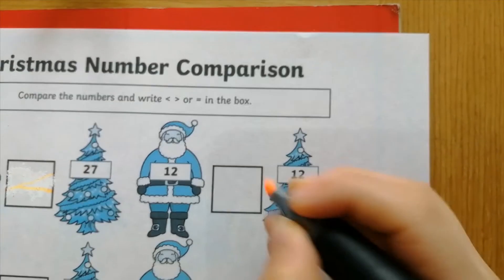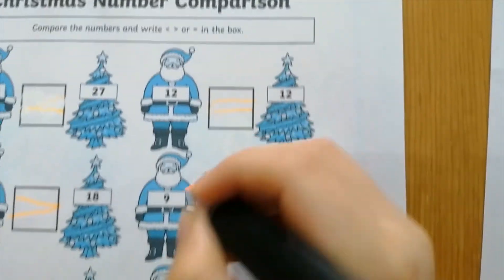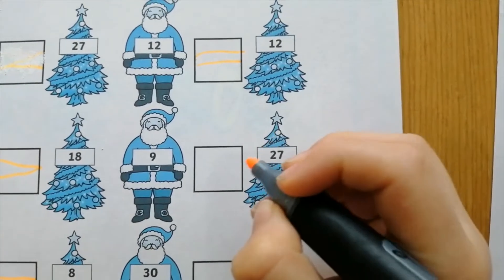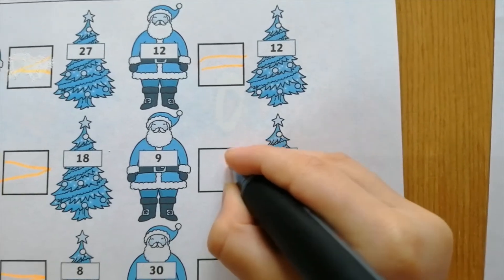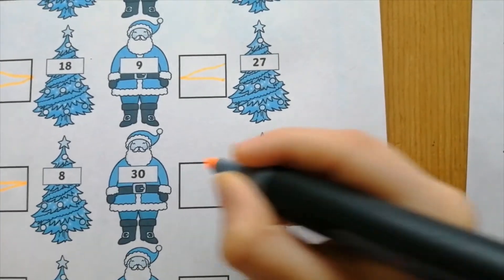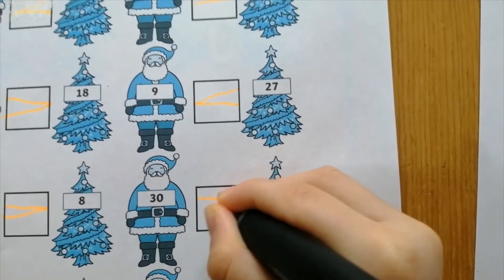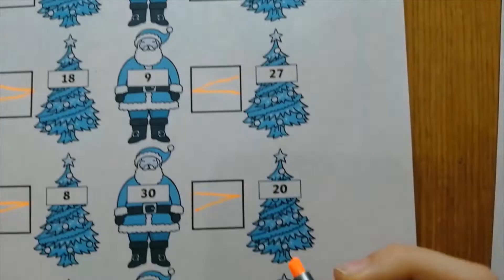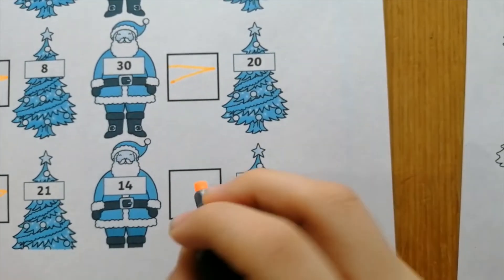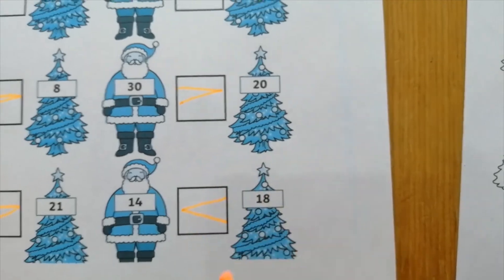Twelve is equal to twelve. Doce es igual a doce. Nine is smaller than twenty-seven. Nueve es menor que veintisiete. Thirty is bigger than twenty. Treinta es mayor que veinte. Fourteen is smaller than eighteen. Catorce es menor que dieciocho.